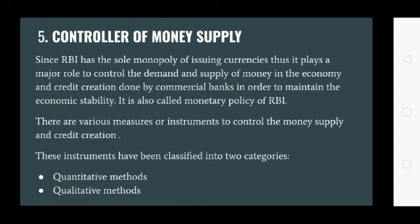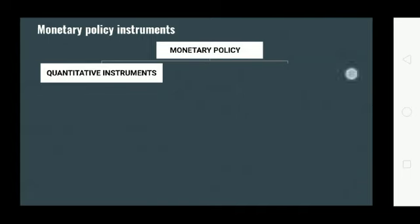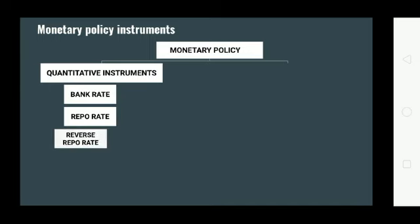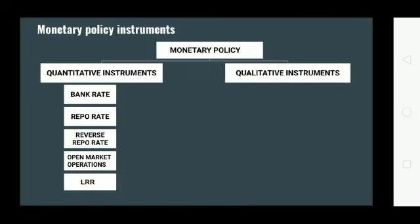RBI uses various measures or instruments to control money supply and credit creation. These instruments are classified into two categories: first, quantitative methods, and second, qualitative methods. The quantitative instruments include: bank rate, repo rate, reverse repo rate, open market operations, and LRR (Legal Reserve Ratio).